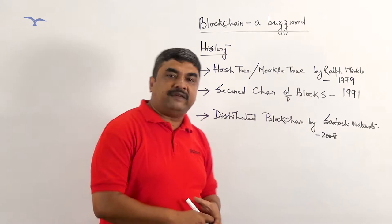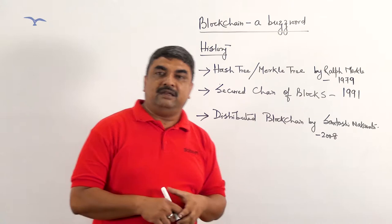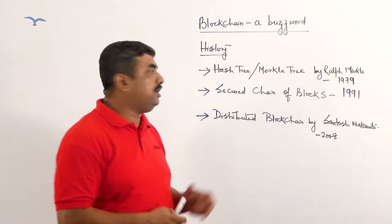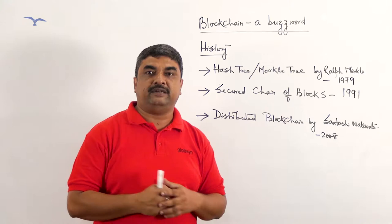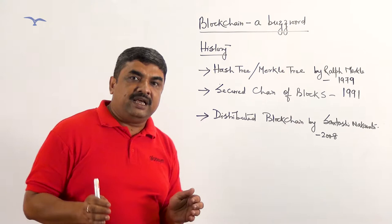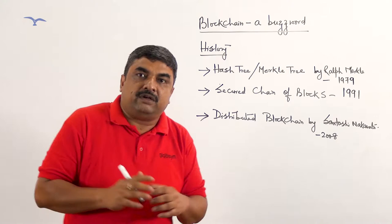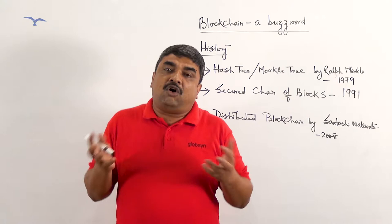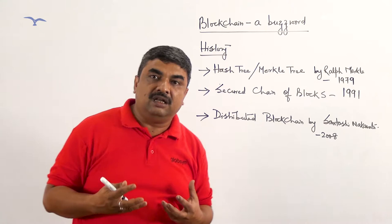In the year 1979, Mr. Ralph Markel invented a decision making tree called hash tree, which is a very primitive form of blockchain. This hash tree actually facilitates exchange of data between two computers in a peer-to-peer network. It not only facilitates data exchange, but it also validates the data, and if the data is not legal, then it stops the data exchange.